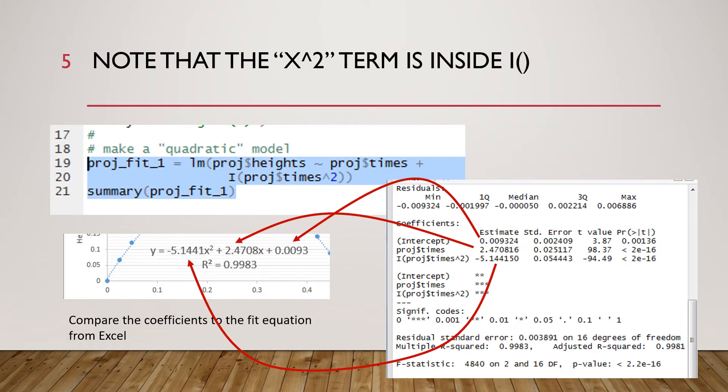Projectile data should be fit to a quadratic or also known as a polynomial of order two. So we've named our fit proj underscore fit underscore one and that is equal to lm. We are using R's linear model function. And then remember in linear model we do y tilde x but now our x is going to be more complicated.